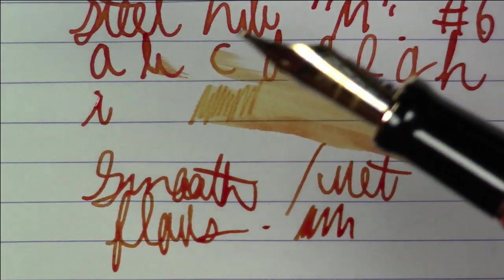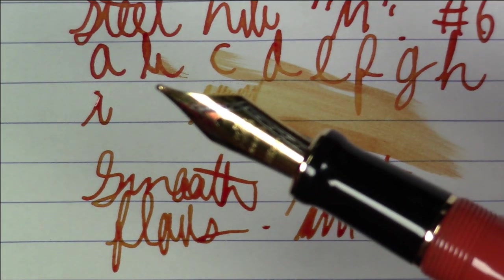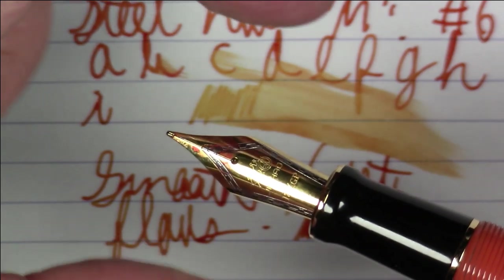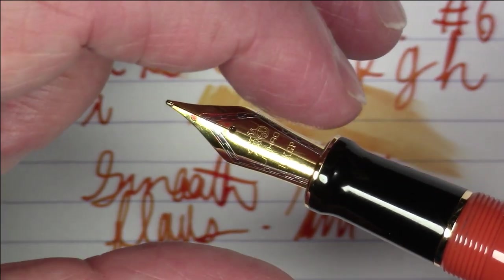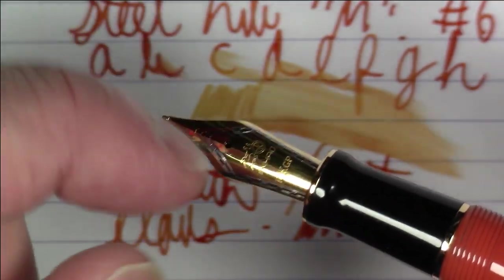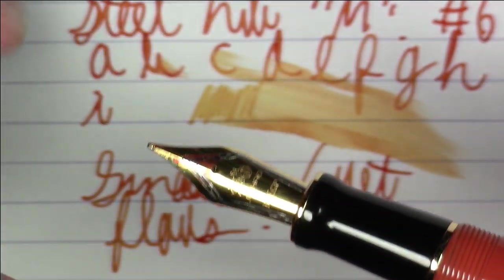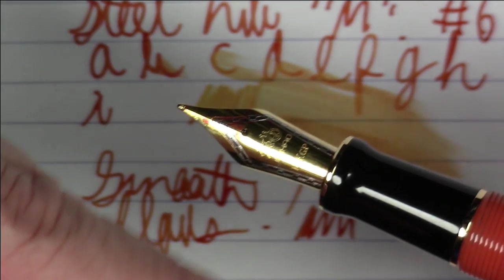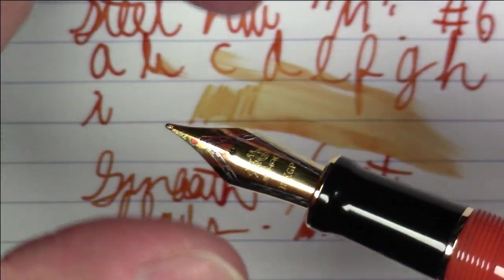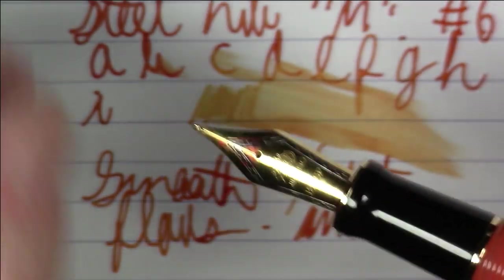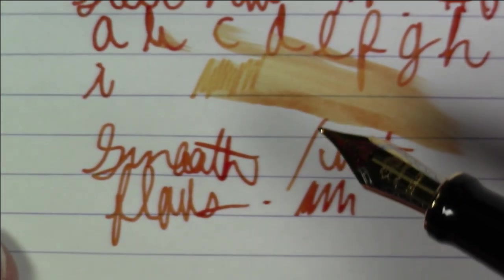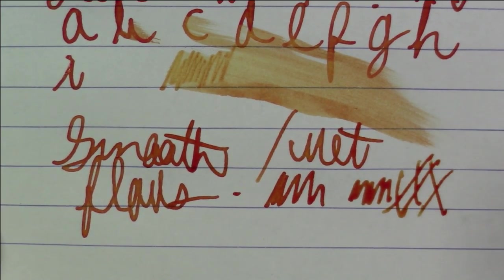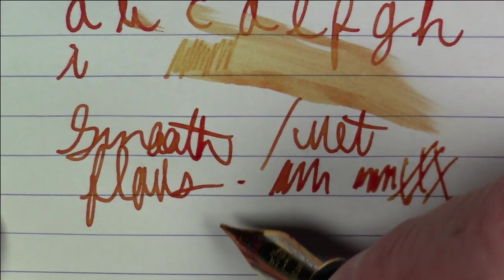So, this nib and this feed are actually quite common in Jinhao pens. This particular Jinhao pen, actually, the nib and feed screw into a nib holder, which then in turn threads into the section. So, the nib and feed don't go directly into the section. There's a threaded nib holder that they go into and then that screws in. So, there's a lot of, you know, nice sort of upgraded manufacturing details of this than you might see on a typical $5 or $10 Chinese made pen.